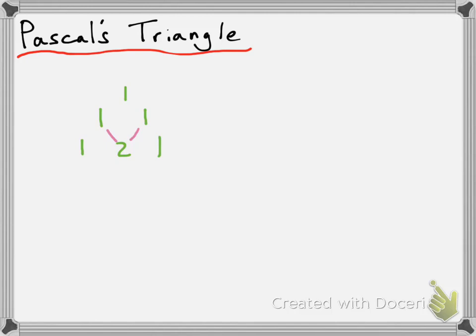We're going to continue on in the same fashion. In the next row, we're going to have one more term than the previous row. Since the very left and very right terms are going to be one, our first term is one. Our second term is the sum of the two terms above it, so one plus two is three. The next term is two plus one, which is also three. And then the last term will have a value of one.